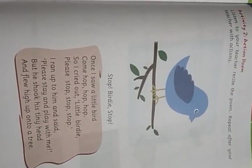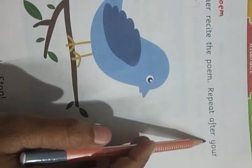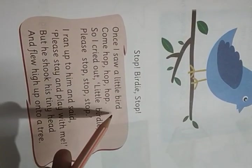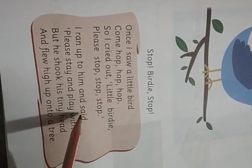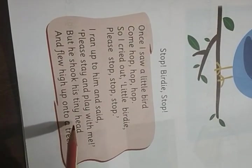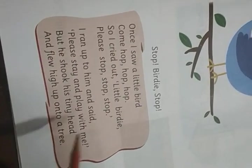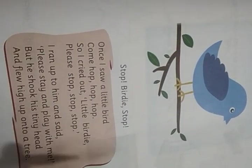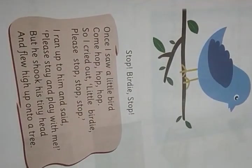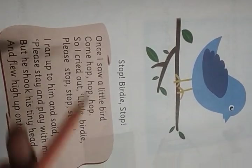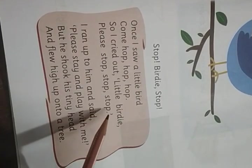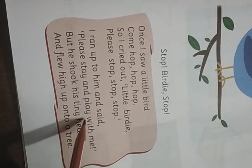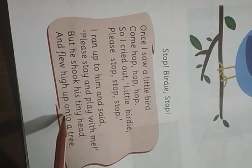Now Activity 2: Activity poem. Listen to your teacher recite the poem and repeat after your teacher. Stop Birdie, Stop. Once I saw a little bird come hop, hop, hop. So I cried out, little birdie, please stop, stop, stop. I ran up to him and said, please stay and play with me. But he shook his teeny head and flew high up into a tree.